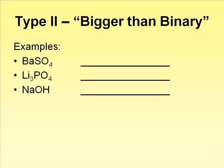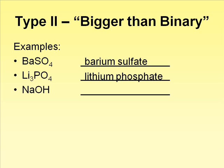Here are a few examples. Each one contains more than two elements. The first compound is composed of barium and the sulfate ion, thus its name is barium sulfate. The second example is named lithium phosphate. The last example is named sodium hydroxide.